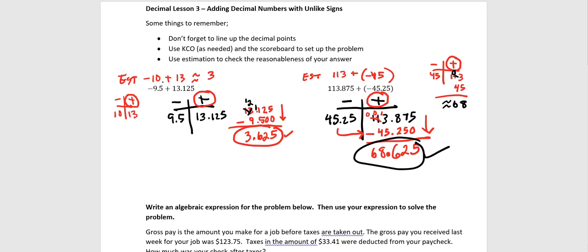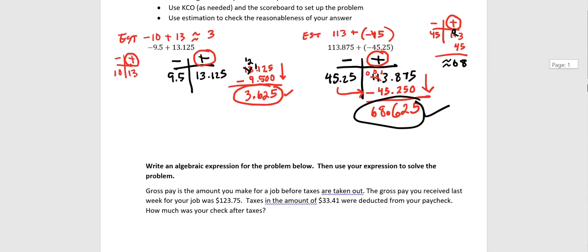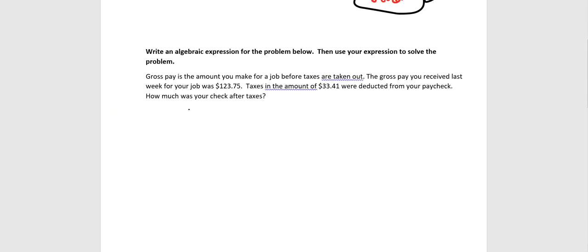Remember, as we're going through these problems, we're using the scoreboard to our advantage, where we are adding, we're putting the numbers in different columns. We'll ultimately find the difference in those numbers. We'll make sure that we use the sign of the bigger number in our final answer. So we'll do one more problem, a word problem. Set it up with the scoreboard. I want you to write an algebraic expression. Let's use addition, using addition, which means that we might need to account for numbers as negative in this problem. And then we'll actually solve the problem from there.